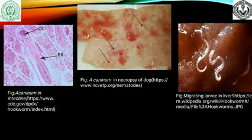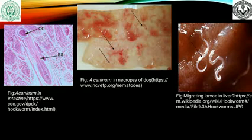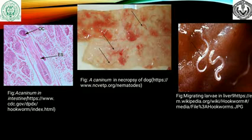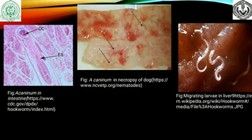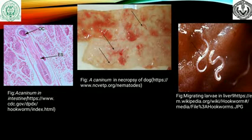Pictures show pathogenesis in the affected organs. The first picture shows Ankylostoma in the intestine with the oral cavity and esophagus visible. The second picture shows ankylostomosis in a dog with visible ulceration and enteritis of the small intestine, which has become totally pale. The third picture shows the migration of larvae in the liver.